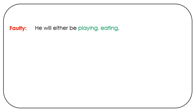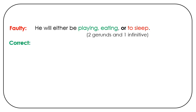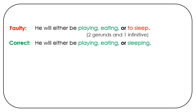Let's look at another example. He will either be playing, eating, or to sleep. There are two gerunds — playing and eating — and one infinitive: to sleep. Here's a correct version: He will either be playing, eating, or sleeping. Now we have three gerunds.